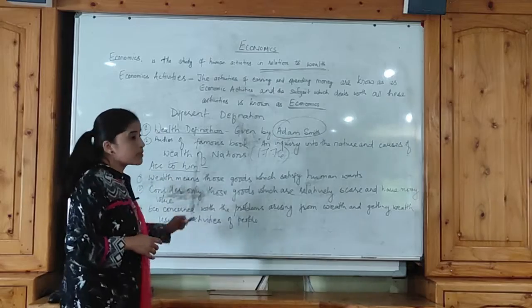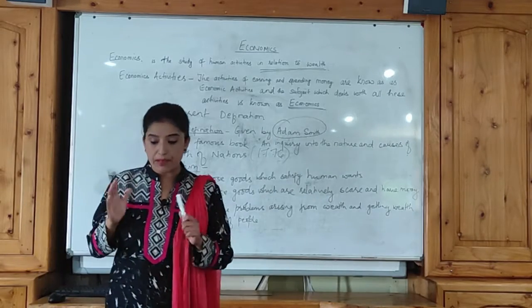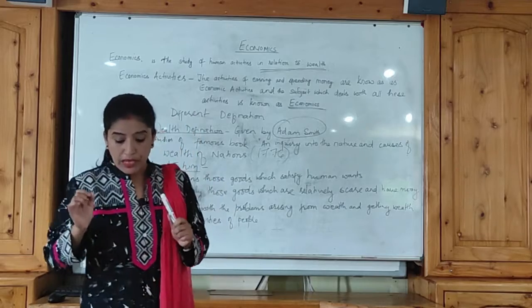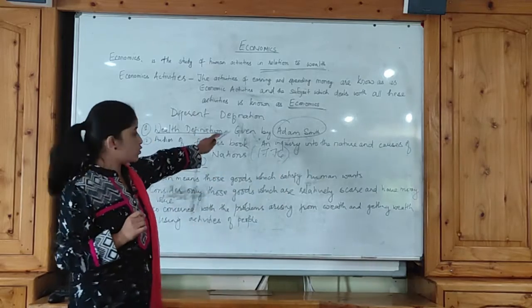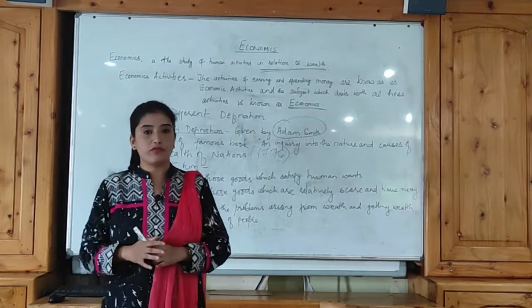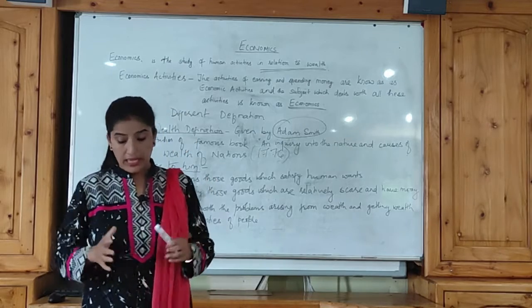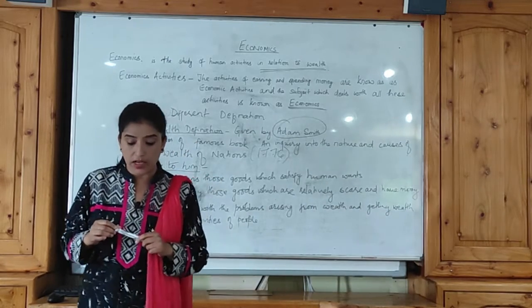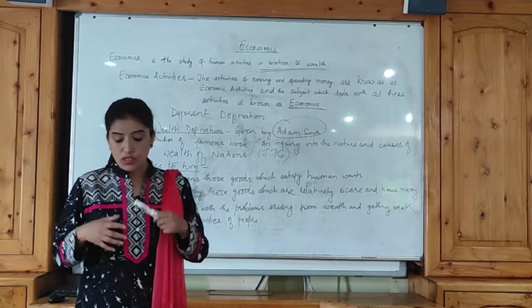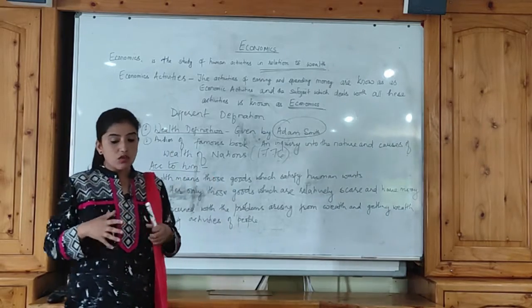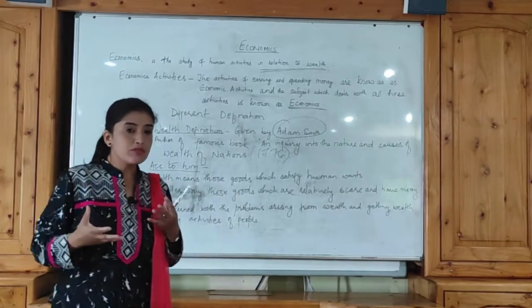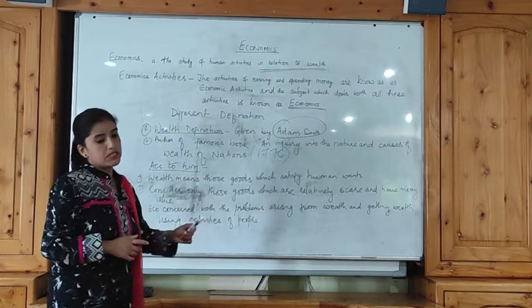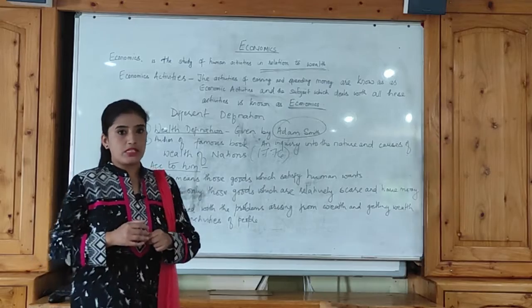When we study Adam Smith's definition of economics, we should keep in mind the time in which he lived. He was writing his famous book on the eve of the Industrial Revolution. The large-scale investment of capital and use of large-scale machinery enabled England to produce wealth on a large scale. That is the reason why Adam Smith put more emphasis on wealth. So that is Adam Smith's wealth definition of economics.